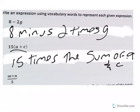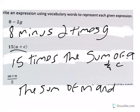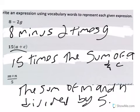And here we have, we could say the sum, since they're adding, of M and N divided by 5. That's just one more way of saying that.